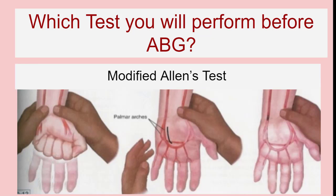Which test will you perform before ABG? Modified Allen's test. Occlude the radial and ulnar artery of the patient and ask the client to clench the fist multiple times. You can see whitish pallor in the palm. Slowly release the pressure from the ulnar site. You can see pinkish return in 3 to 5 seconds. If it is more than 8 seconds, we cannot use that extremity for ABG.